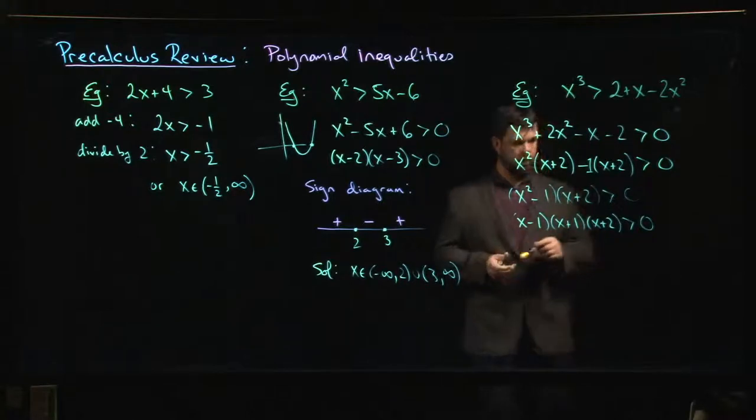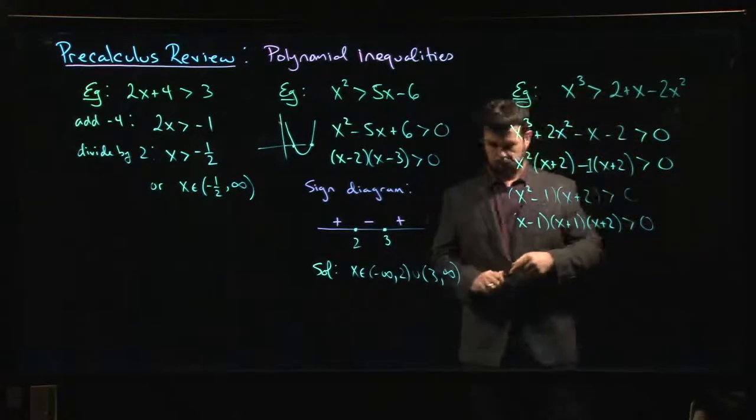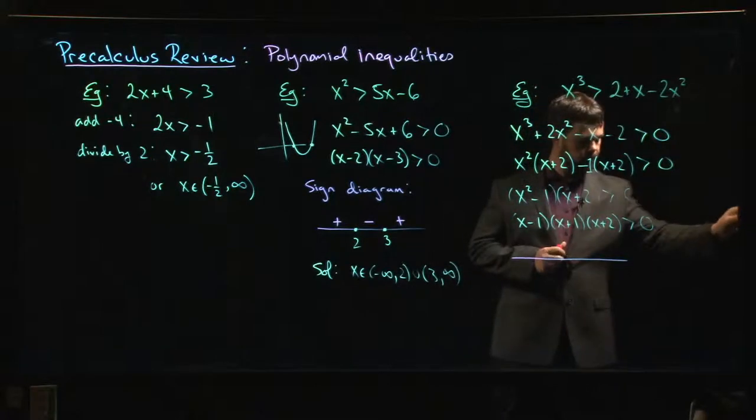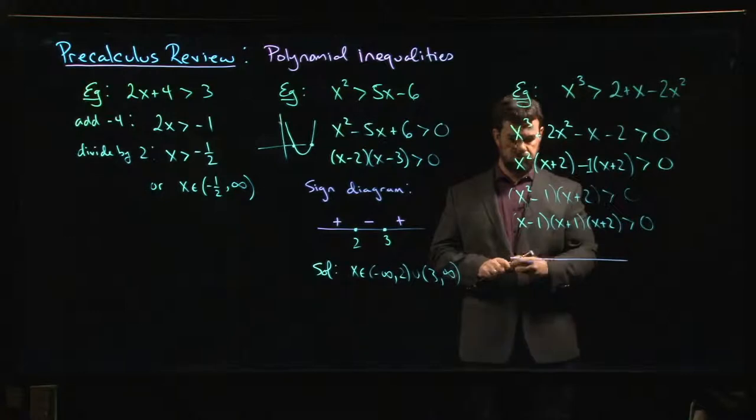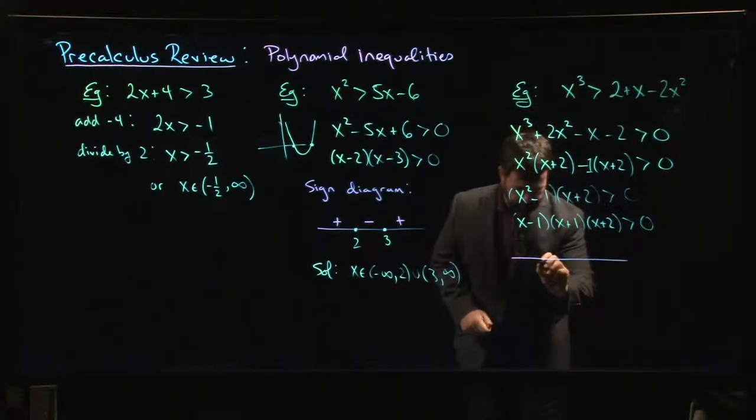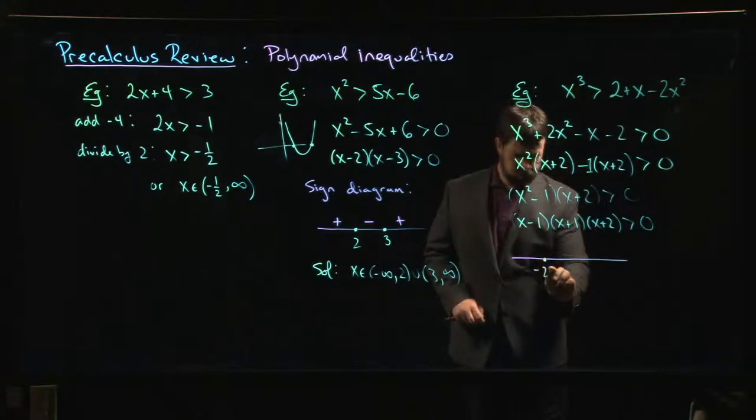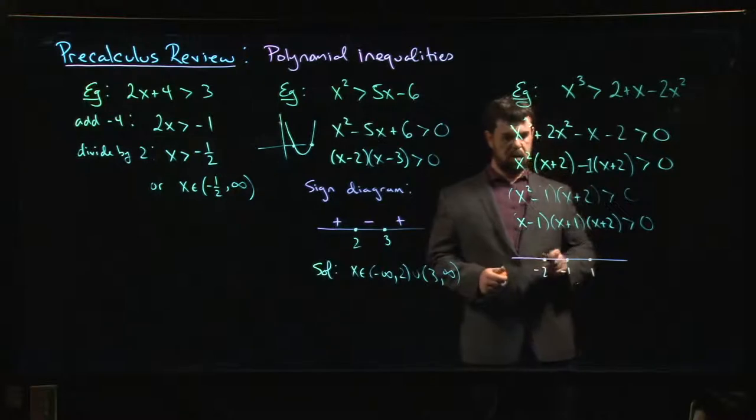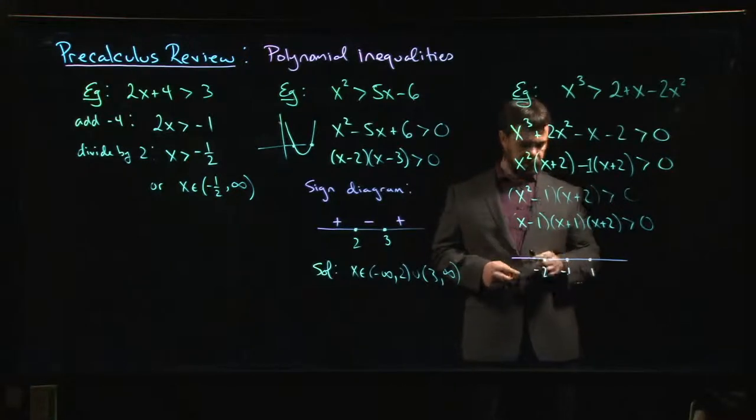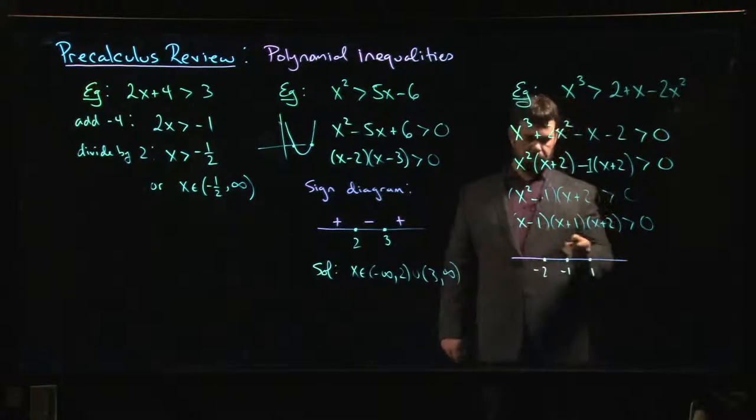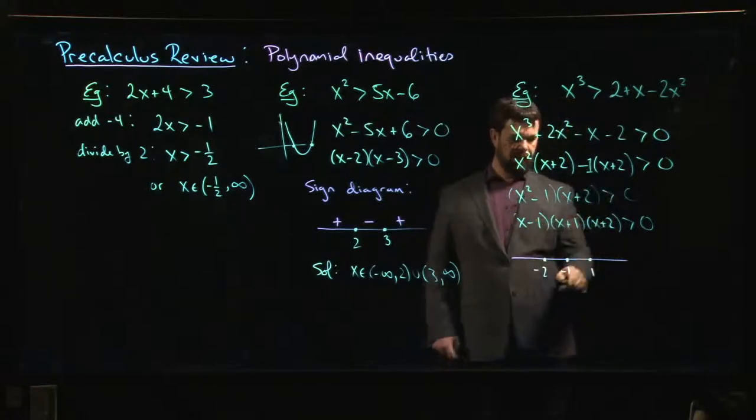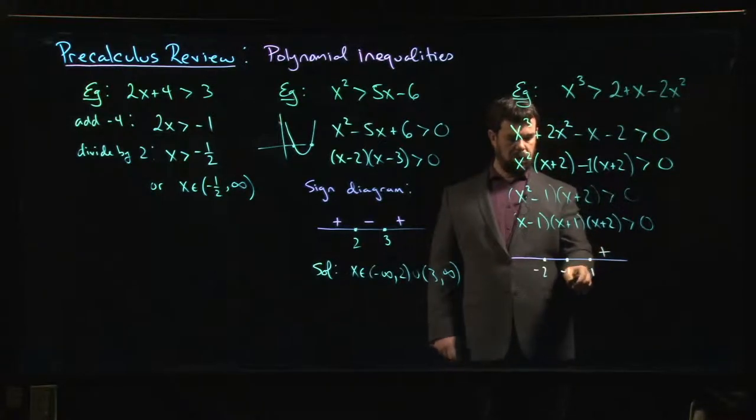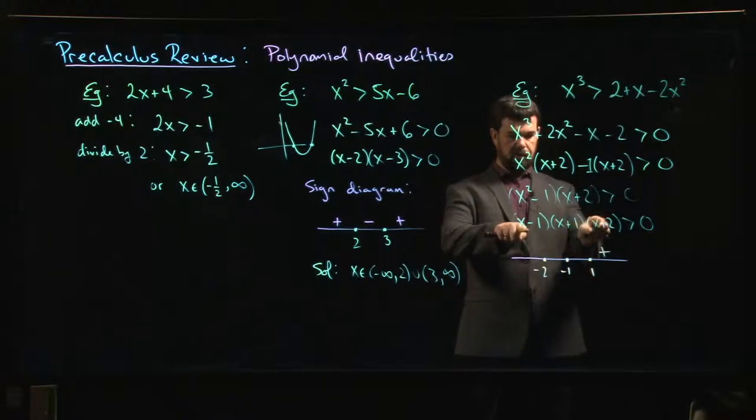So we need (x minus 1) times (x plus 1) times (x plus 2), we want that to be bigger than 0. So we draw our number line. We mark off the three roots. There are roots at minus 2, minus 1, plus 1. And now we have to work out the sign in each interval. If we choose something bigger than 1, 2 for example, we can quickly see that all three factors are positive, so the whole thing is positive. If we choose something between minus 1 and 1, this first factor is going to become negative, the other two remain positive.